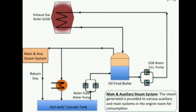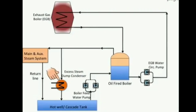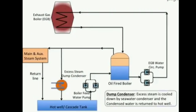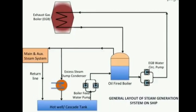The steam dump condenser cools down excess steam using sea water, and the condensed water is then returned to the hot well. This is a general layout of a steam system fitted with an exhaust gas boiler.